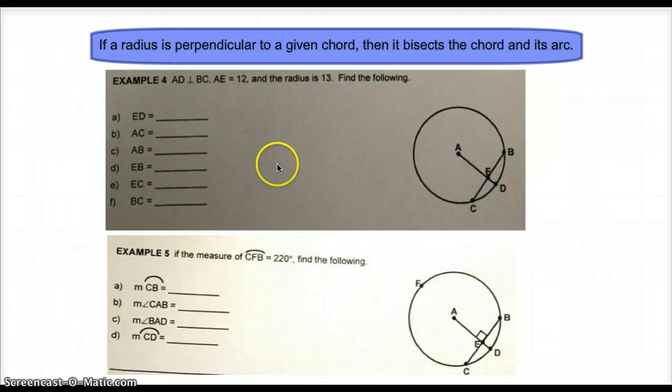In our next slide, we're introduced to our next theorem, which states if a radius is perpendicular to a given chord, then it bisects the chord and its arc. Let's see how we can utilize this particular theorem. Let's take a look at example 4. In example 4, we're told that radius AD is perpendicular to chord BC. We're also told that from A to E is 12, and we know that the length of any radius is 13. We're asked to find the lengths of the following segments. Well, if every radius is 13, and segment AE is 12, then that means that ED must have a length of 1.